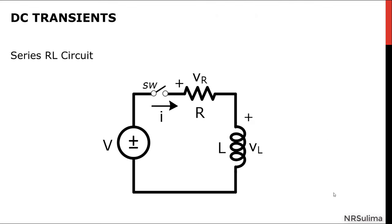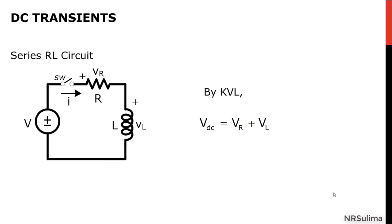The simplest transient is the one that occurs when a constant voltage V is suddenly applied to a series RL circuit in which no current flows at time equal to zero. By KVL, we can see that the voltage supply is equal to the sum of the voltage drops across the resistor and the inductor.